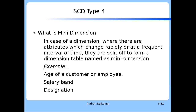What is Mini Dimension? In case of a dimension where there are attributes which change rapidly or at a frequent interval of time, then they can be split and made to form a new dimension table named as Mini Dimension. Examples for such rapidly or frequently changing attributes are age of a customer or employee, which changes every year, the salary band of an employee, and the designation of an employee, which changes frequently as well.